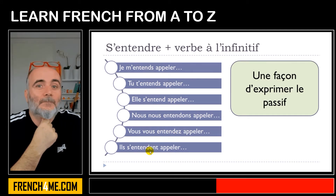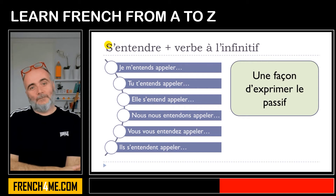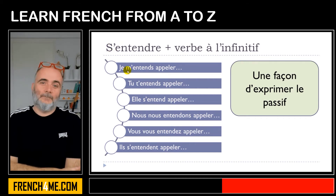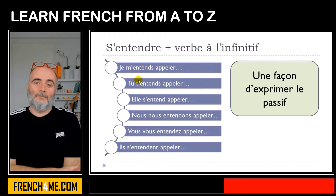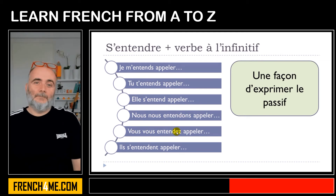As it's a verbe pronominal, you will have to add the reflexive pronoun: me for je — je m'entends; tu t'entends; elle s'entend; nous nous entendons; vous vous entendez; ils/elles s'entendent. Then it is followed by the verb at the infinitive.